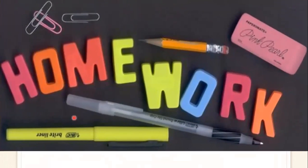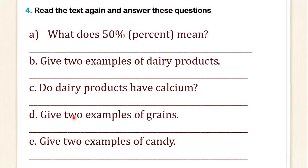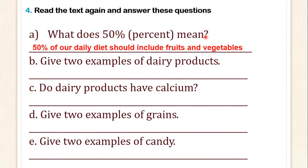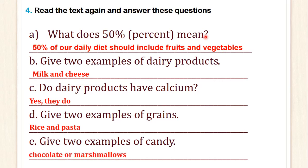Now, with this story time, your homework is this: read the text again and answer the questions. Leer de nuevo el texto y responder las siguientes preguntas. A: What does 50% mean? 50% of our daily diet should include fruits and vegetables. B: Give two examples of dairy products — milk and cheese. C: Do dairy products have calcium? Yes, they do, all have calcium. D: Give two examples of grains — for example, rice and pasta. E: Give two examples of candy — chocolate or marshmallows.